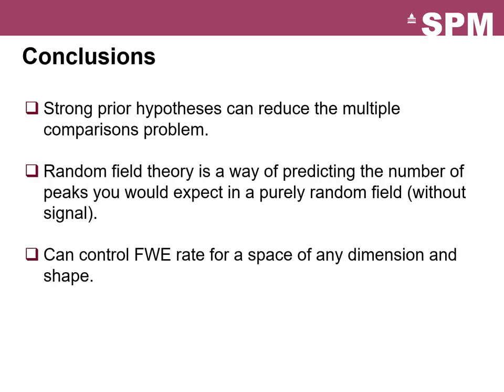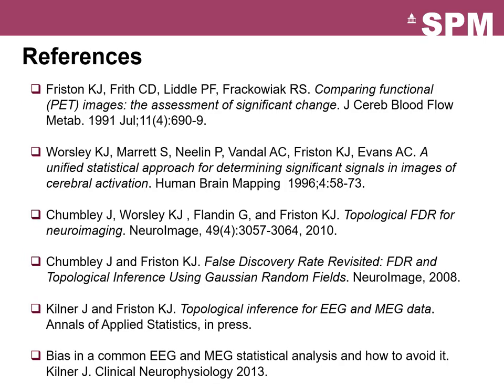In conclusion, strong prior hypotheses can reduce the multiple comparisons problem completely, and for very small volumes Bonferroni may be the best option. For whole brain results, random field theory is an incredibly powerful way to look at peaks, clusters, and sets of results — even in time series and time-frequency domains — in a flexible and rigorous manner, controlling the family-wise error rate for any space of any dimension and shape. For further reading, a number of key references are listed covering the development of random field theory over the last 30 years.